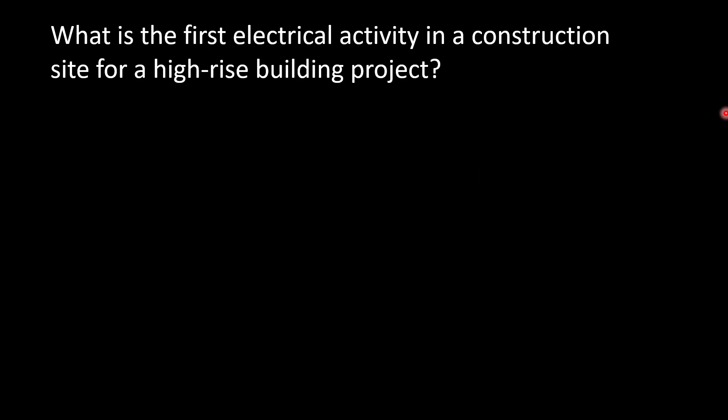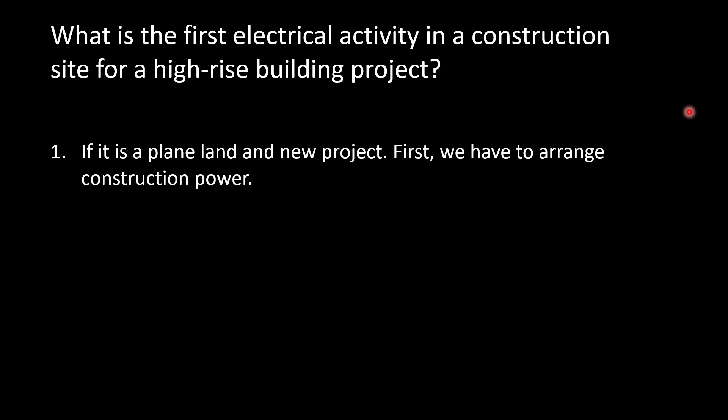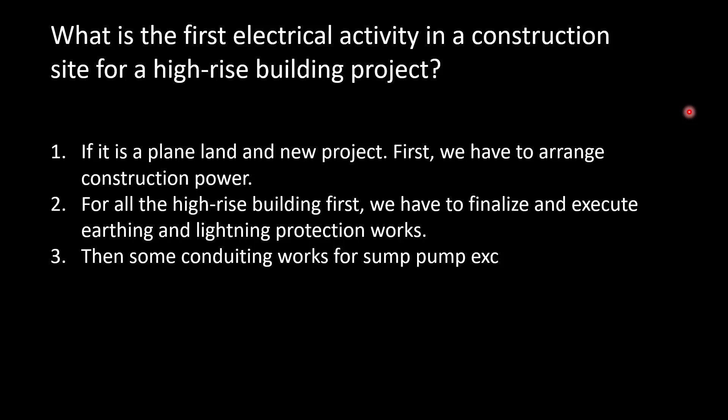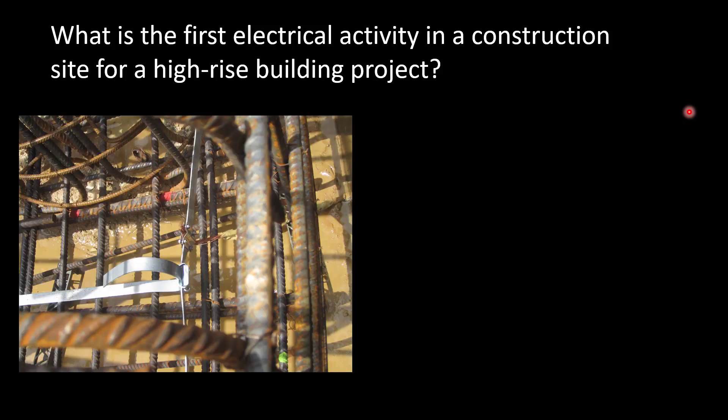The next question is: what is the first electrical activity on a construction site for a high-rise building project? If it is an entirely new project starting from scratch, the first activity will be arranging construction power for construction activities — also called temporary power. We have to arrange temporary power and a site office. For a high-rise building project, the next activity will be lightning and earthing works. We have to finalize lightning and earthing protection materials. The first activity shall be lightning protection works, because it is normally done below the plinth or below the raft. Parallel to this, some conduiting works in small columns and walls will also begin. This is a sample picture of a lightning protection earth mat or foundation earthing on the raft or plinth.